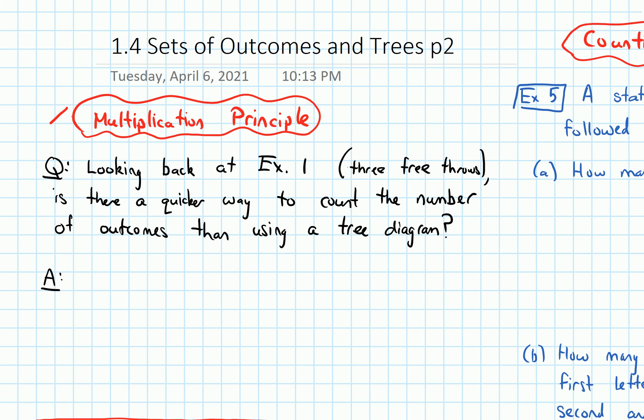So flipping it back to the question, the question is: is there a quicker way to count the number of outcomes than using a tree diagram? And the answer is yes.